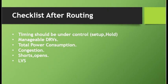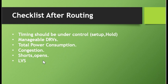With this, all the stages of routing complete and the post-routing checklist begins. After routing is done, we should check that timing is under control, DRV should be fixable, power should be under control, congestion should be under control, and there should be minimum shorts, opens, and LVS violations which can be easily fixed. Once routing is done, we need to take care of all these things and finally fix everything — but after routing, these issues should be minimal.